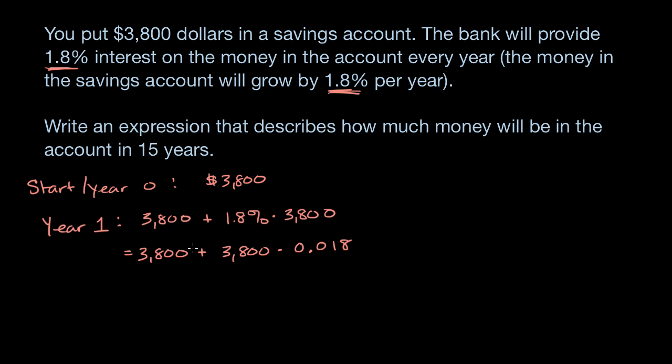Here there's an interesting potential simplification mathematically. I could factor 3,800 out of each of these terms. So this is going to be 3,800 times 1 plus 0.018, which I could rewrite as 3,800 times 1.018. This is an interesting expression for how much we have after one year.